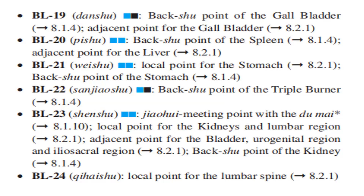Bladder 19 is also the adjacent point for the gallbladder. Bladder 20 is the Back-Shu Point of the Spleen and the adjacent point for the spleen. Bladder 21 is the local point for the stomach and the Back-Shu Point of the Stomach. Bladder 22 is the Back-Shu Point of the Triple Burner. Bladder 23 is the Jiao Wei meeting point for the Du Mai.